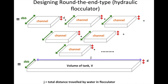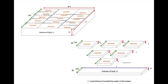The length of this volume of tank is equivalent to J, where J represents the total distance traveled by water in the flocculator. Basically, what I'm trying to say is the volume of this long cuboid is the same as the volume of the flocculation tank.